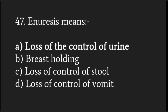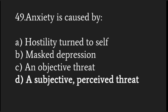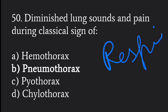Enuresis means loss of control of urine. The fourth cranial nerve is the trochlear nerve. Anxiety is caused by a subjective and perceived threat. Diminished lung sound and pain during respiration is a classical sign of pneumothorax.